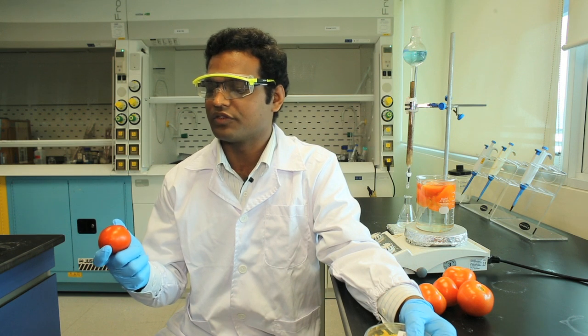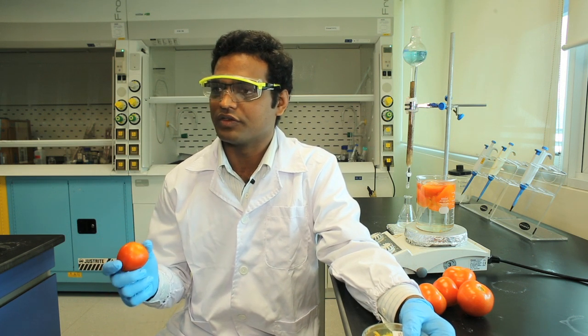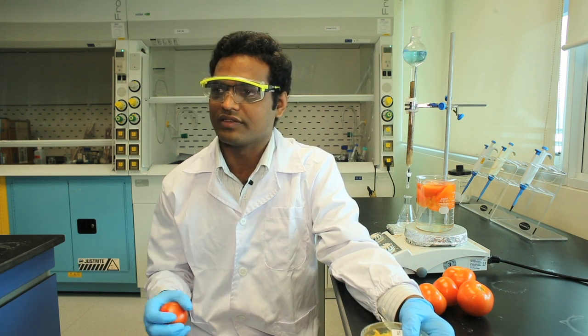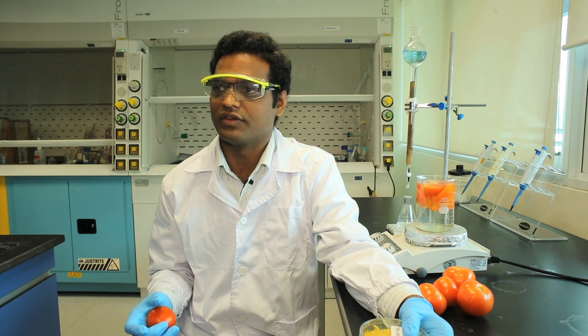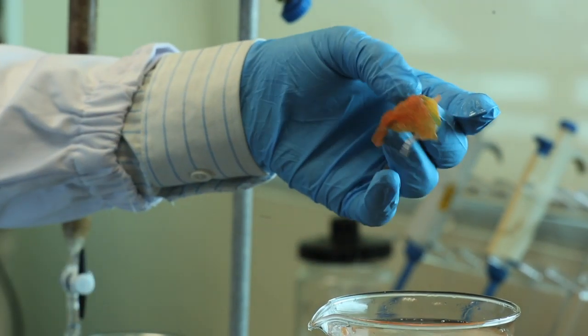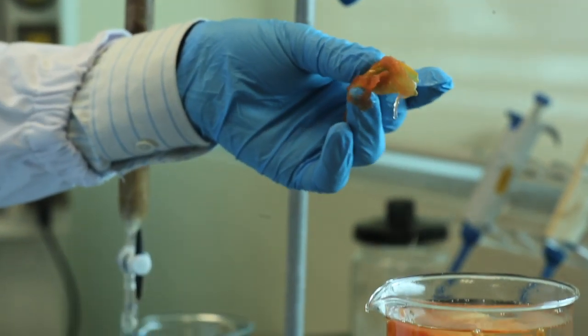Tomatoes are the second most widely consumed vegetable throughout the world. There is a lot of tomato waste produced in different food processing industries. Tomato skin is one of the highest wastes they are worried about. We found out that tomato peel can be used to remove most of the pollutants, dyes, pesticides and other organic things.